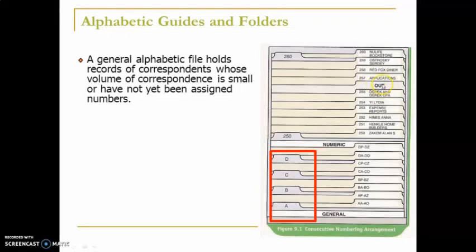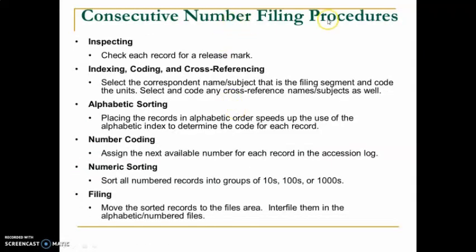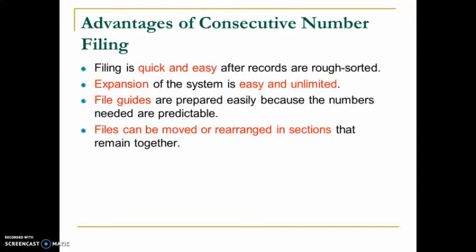There is also an out guide, which will be covered in Chapter 6. An out guide indicates that a record has been borrowed — for example, record number 256 has been taken out. The filing procedure for consecutive numeric filing includes: inspection, indexing, coding and cross-reference, alphabetic sorting, numeric coding, numeric sorting, and filing. You can read through this procedure on your own.